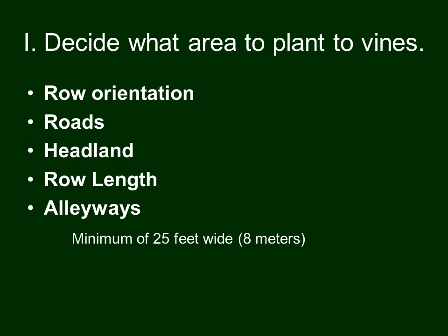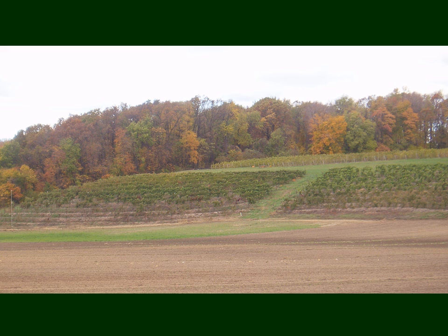Alleyways should be a minimum of 25 feet wide, that is about 8 meters. Here we are on a steep south-facing slope with two vineyards separated by an alleyway about 25 feet wide. That allows us to work this area separately from the other, and it's much more efficient than if we were to not have that alleyway separating the two sections of vineyard.